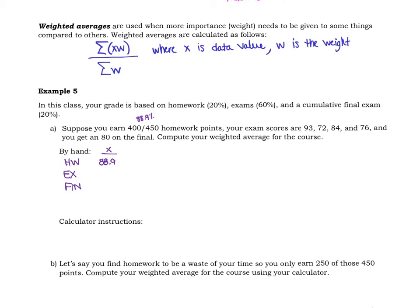Your exam scores, 93, 72, 84, and 76, go ahead and average those four. It's not going to take you very long. The average for those four is 81.25 percent, and so that is your exam average. And you get an 80 on the final. So those are all of your x's. The w's are the weights, so homework is worth 20 percent so we're going to give that a 0.2, exams 60 percent, 0.6, final exam 0.2.